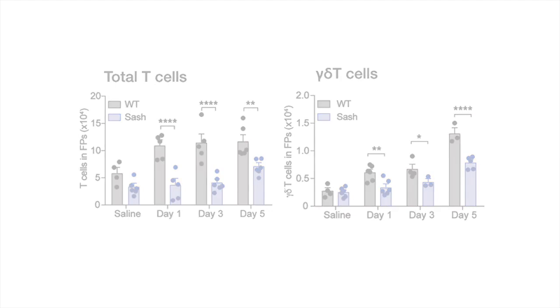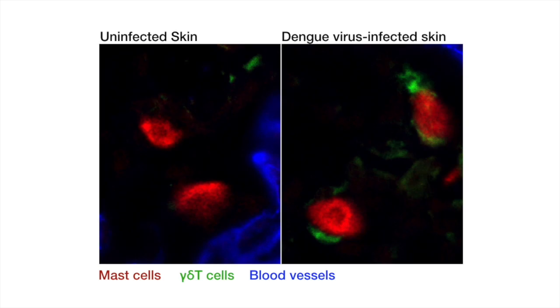We visualized the mast cells and Gamma-Delta T-cells at the site of infection, and we were extremely surprised to see that there were many indications that the cells were interacting with each other. As you can see on the left in uninfected skin, there are mast cells that are not interacting with any Gamma-Delta T-cells, but on the right in the dengue-infected skin, you can see that mast cells and Gamma-Delta T-cells are really closely associated with each other, and they're interacting physically.